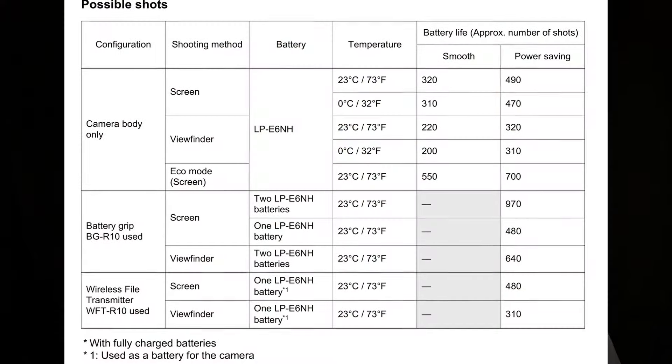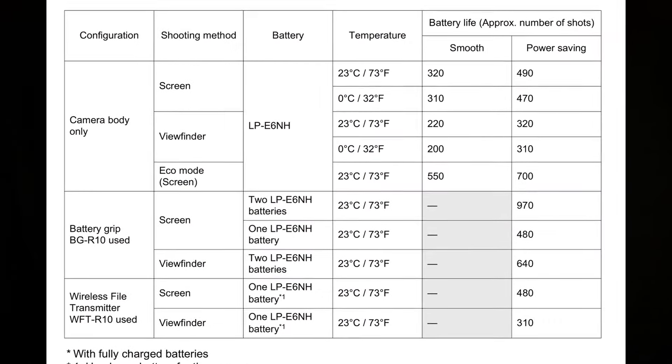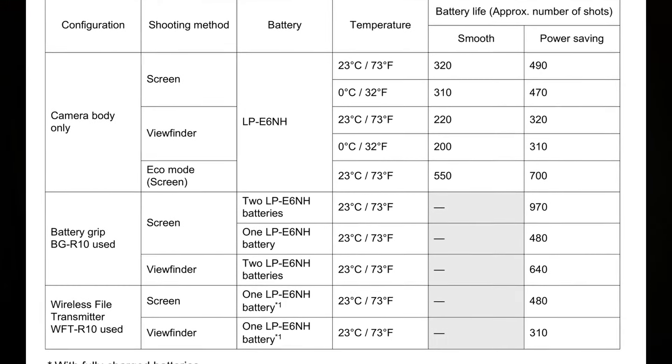That brings me to the big thing I wanted to talk about: how all of this affects power consumption. If you've ever looked at the power consumption data in the back of the manual, you'll see that shooting with the viewfinder uses considerably more power than the screen. This difference is largely attributed to the higher resolutions and refresh rates the viewfinder runs at. In power saving mode, the viewfinder runs at 60fps while the screen runs at 30. In smooth mode, the viewfinder runs at 120fps while the screen runs at 60. Simply put, dealing with that much more data requires more power.